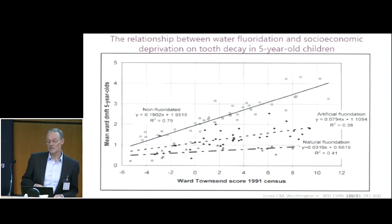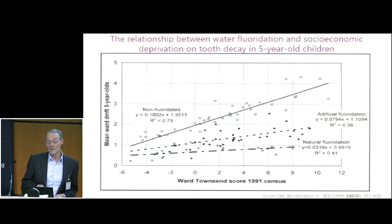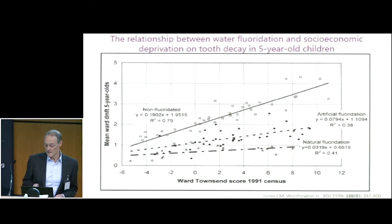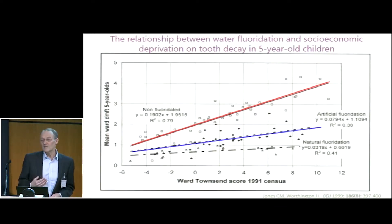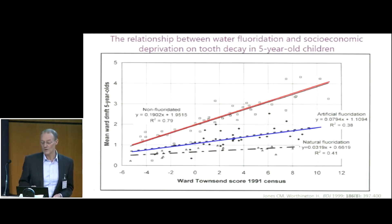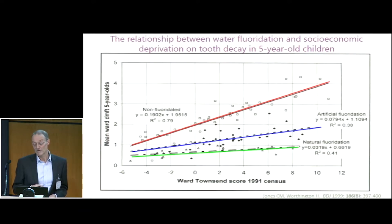To give an illustration of the effect of this, here is data on water fluoridation in the UK. On the vertical axis is mean decayed, missing, and filled teeth in five-year-olds in small areas — each point on this graph is a small area — distributed according to socioeconomic position on the x-axis using Townsend deprivation score. In non-fluoridated areas there's quite a steep socioeconomic gradient. In artificially fluoridated areas, this reduces overall decayed, missing, and filled teeth, and also reduces the socioeconomic gradient, so it has a positive effect on health equity. Naturally fluoridated areas tend to have slightly higher levels of fluoride, so the impact is even bigger.